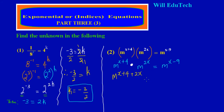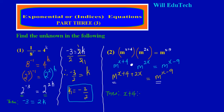If you're not sure about this, you could revisit the first rule on indices for multiplying same-base indices. On my right-hand side I have base m raised to x minus 9. By comparison, both sides have the same base m, so I can equate the powers: x plus 4 plus 2x equals x minus 9.